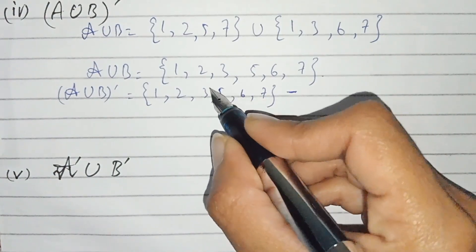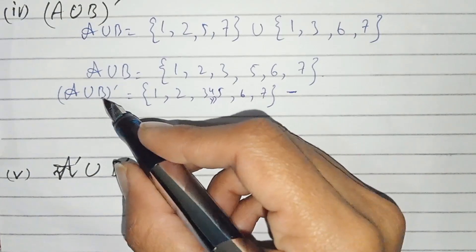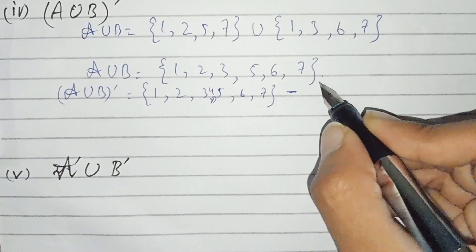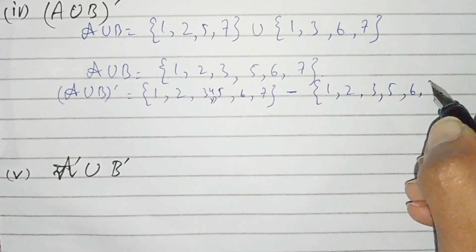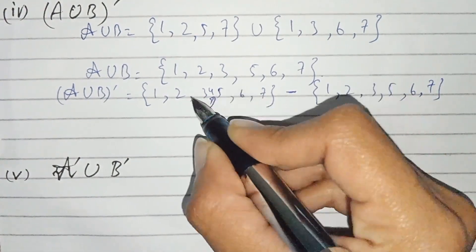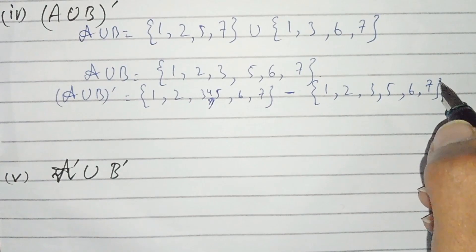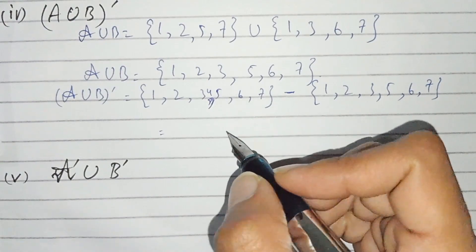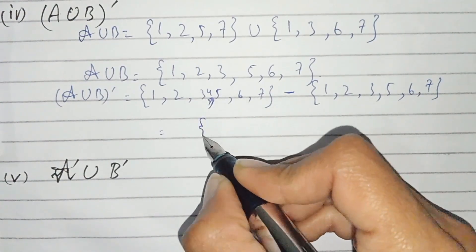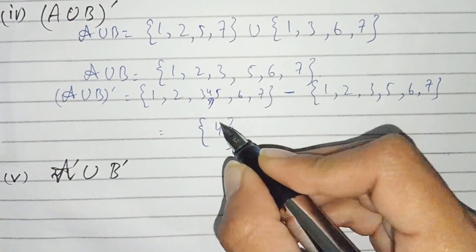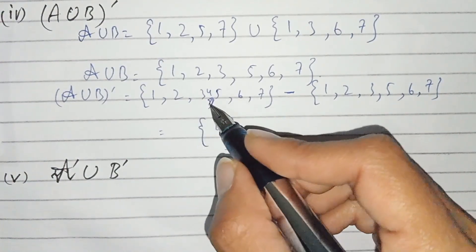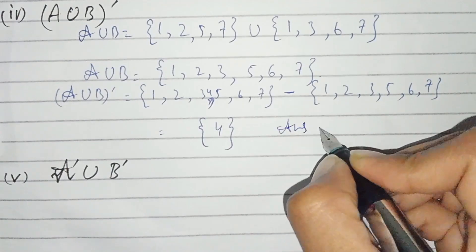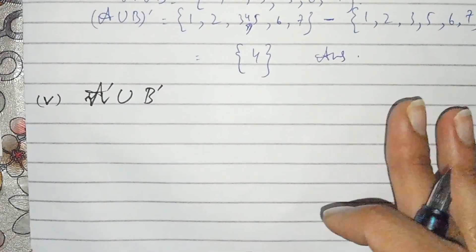4 is also included in U. (A union B) complement is U minus (A union B): U is {1,2,3,4,5,6,7} and A union B is {1,2,3,5,6,7}. When we subtract, we get only {4}, because 4 is the only value present in U but not in A union B. This is the answer to part number four.